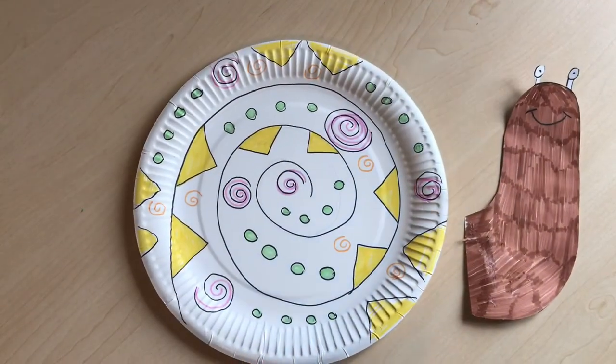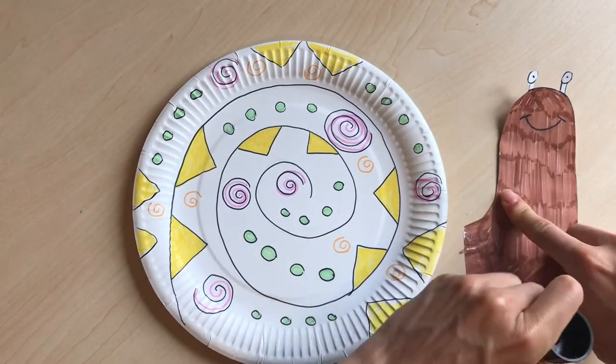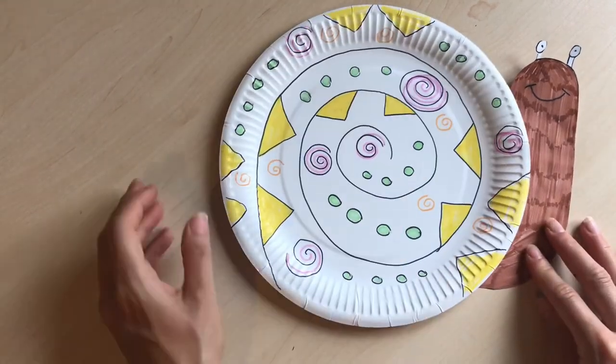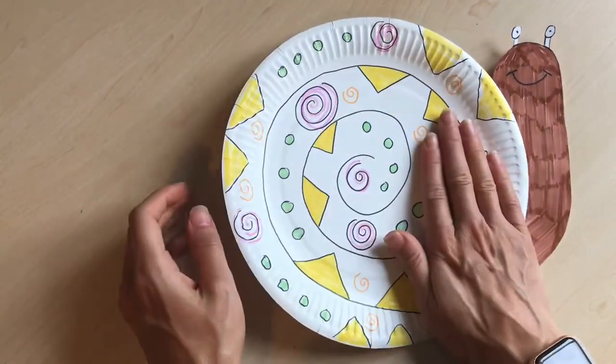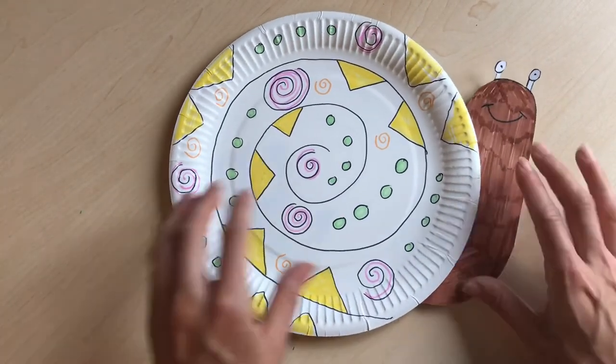Okay and then the final bit we need to glue our slug to its shell. So just put a little bit of glue there and pop the shell on top. You could either use glue or sellotape and there you have it, you've got your paper plate snail, looking very cool.